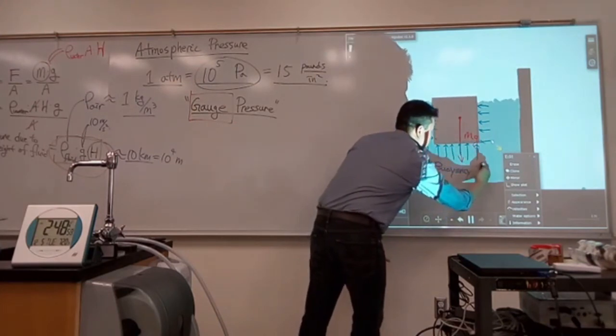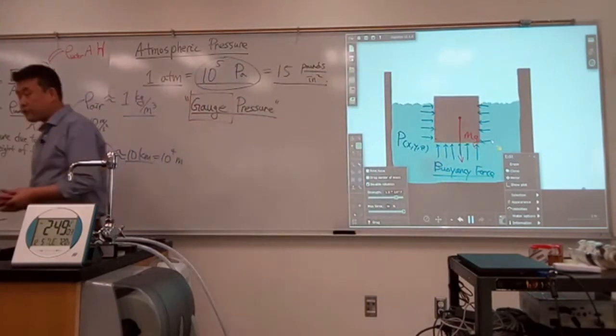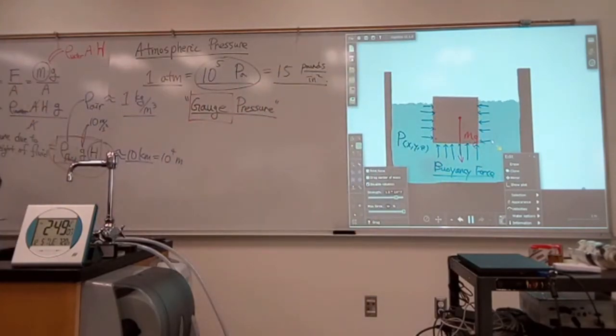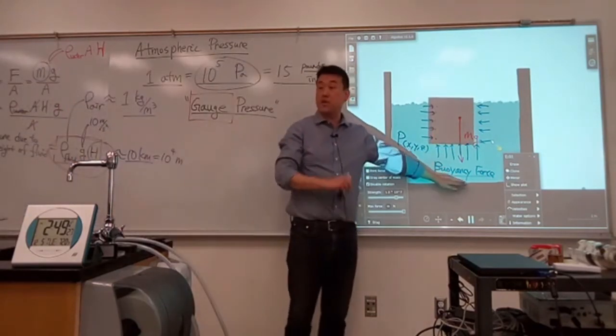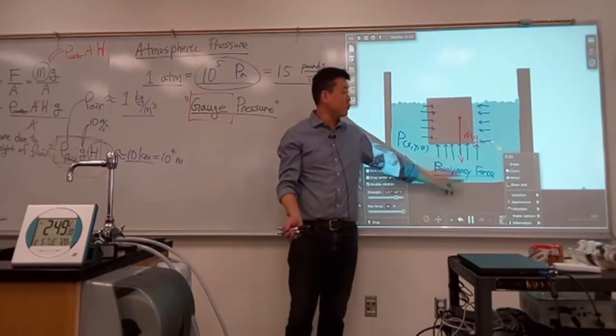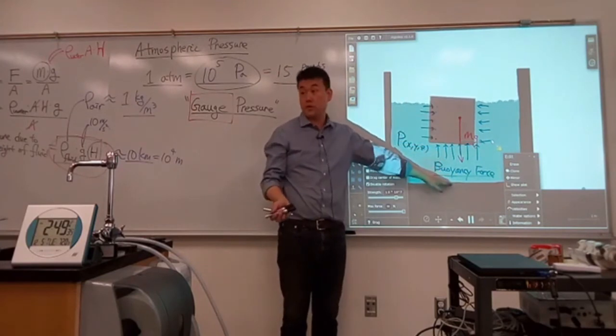We can actually derive an expression for it. And when we come back for the left section, we'll do this for a general case. Right now, you are looking at a special case where the object is partially submerged. When we come back, we'll start out with the object completely submerged. Because what you will see is that, if you imagine putting a scale on the bottom and measure the normal force, you'll find that the amount of normal force on this is actually less than you would expect it to be because of this buoyancy force.